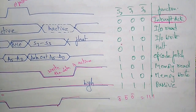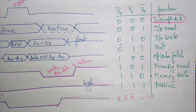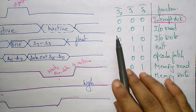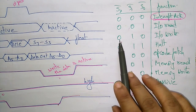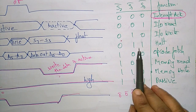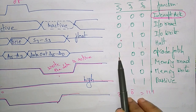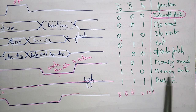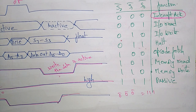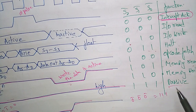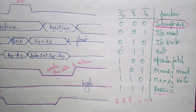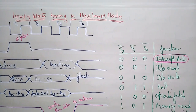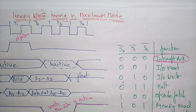Status signals: 0,0,1 means I/O read; 0,1,0 means I/O write; when both are present, halt condition. 1,0,0 means opcode fetch; 1,0,1 means memory read; 1,1,0 means memory write. If all ones (one bar, one bar, one bar = completely zero), it is in passive state. This is about the memory write timing diagram in maximum mode. Thank you.